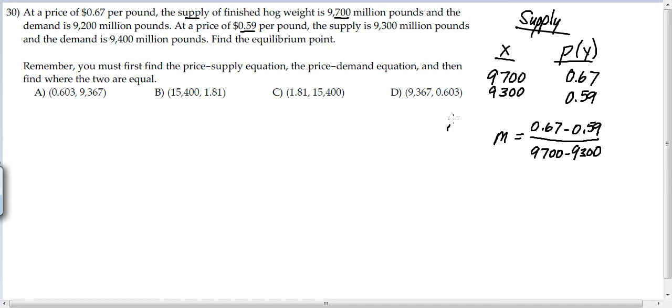And then the numerator is going to be 0.67 minus 0.59. So remember, this is always delta Y over delta X. We're changing Y over changing X. So the Y is that. So we do that there, and we get 0.08, and then we have 400 on the bottom. So therefore, the supply equation should work out to be, or the slope anyway should work out to be if we do that in the calculator should be 0.0002. That should be our slope.